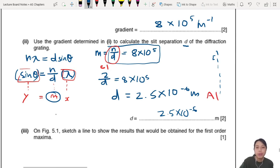Now the last one - on Figure 5.1, sketch a line to show the results if you're using your first order maxima. So all this angle we measure and plot graph is for the second order. If you want to use first order, your angles is probably going to be smaller. So I'll just make a note here - first order, your angle is probably smaller for every single wavelength.